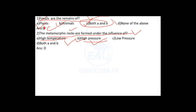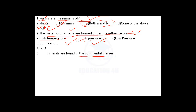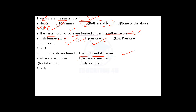Dash minerals are found in the continental masses. The correct answer is SIAL — Silica and Aluminia — and the answer is number A.